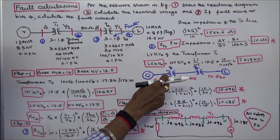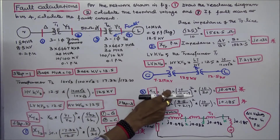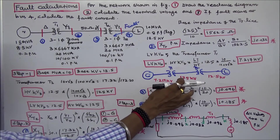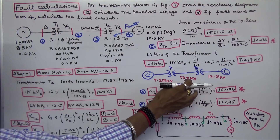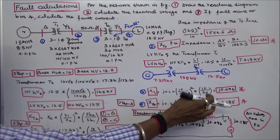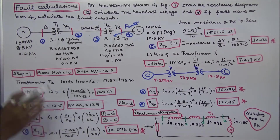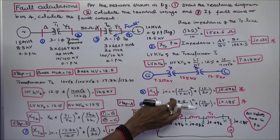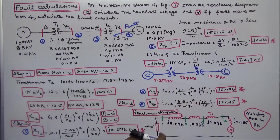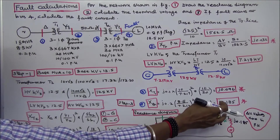Per unit reactance of Transformer 1: XT1 = j0.1 × (10/7.217)² × (10/20) = j0.096 per unit. For the generator: XG = j0.2 × (8.5/7.217)² × (10/15) = j0.185 per unit.